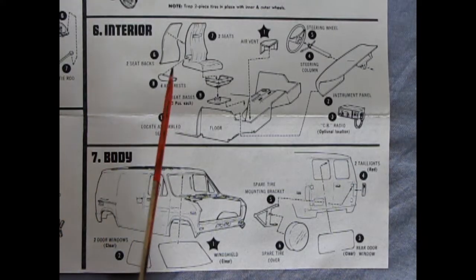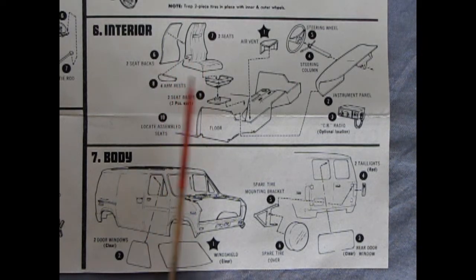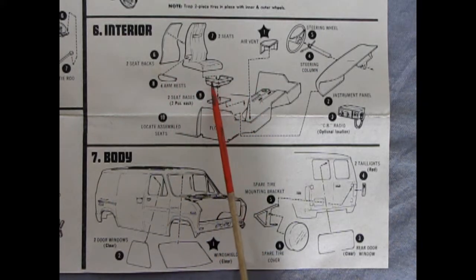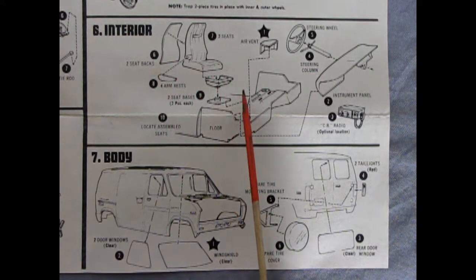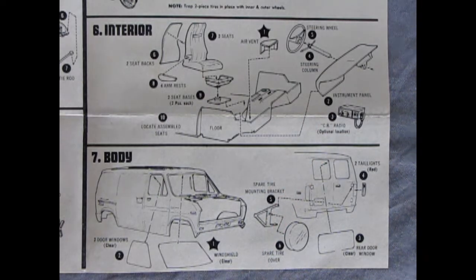Panel 6 shows our interior going together. There's those captain chairs, and you can see how many pieces are needed to assemble them. You got your seat back, your seat front, four armrests for the two different chairs of course, and then we have this base and the swivel mount down below. Here's an air vent which pops into place. Steering wheel, steering column, dashboard and our CB radio.